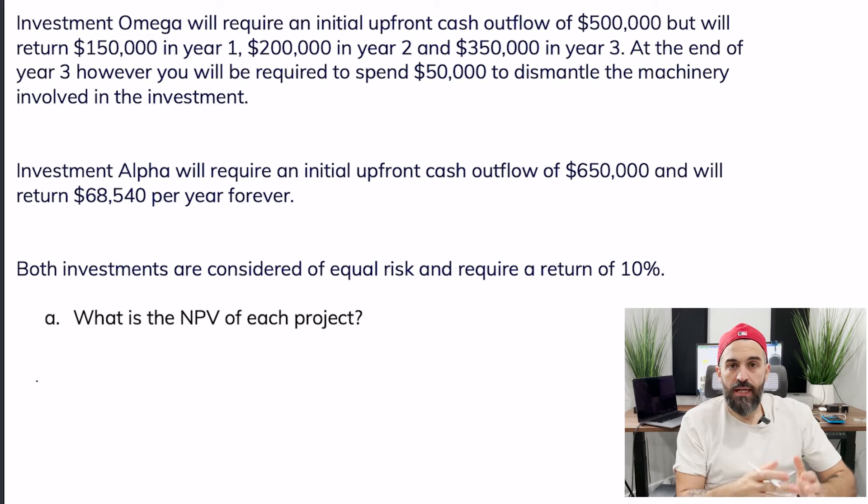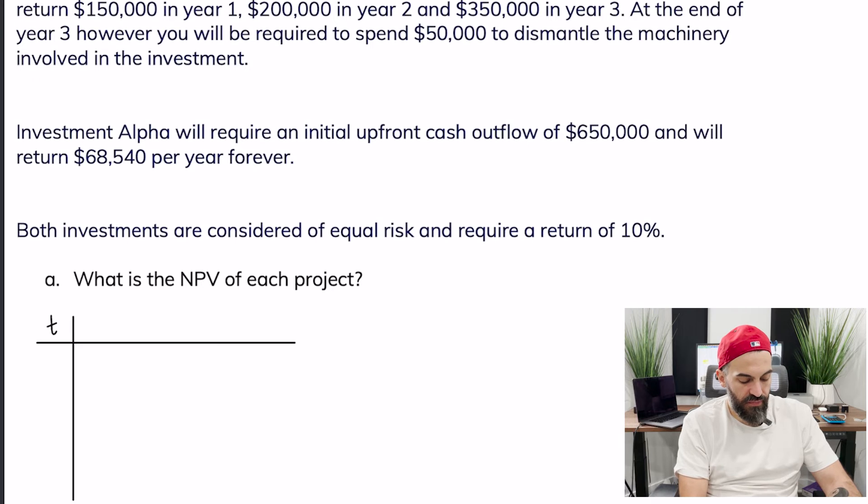So the first thing I'll do is write out my cash flows kind of in a table so it's easier to see. So I'll make a little table here for Omega with time zero, one, two, and three.